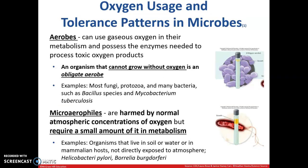Aerobes use oxygen in their metabolism and possess the enzymes needed to process those toxic byproducts. An organism that cannot grow without oxygen is called an obligate aerobe. Examples include fungi, protozoa, and many bacteria. Microaerophiles are harmed by normal atmospheric concentrations of oxygen but require a small amount in their metabolism. These organisms live in soil, water, or a mammalian host not directly exposed to the atmosphere.